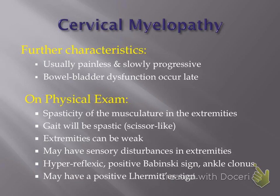Lhermitte's sign is when you have the patient bend their chin down to their chest and they get almost a shock-like sensation. That's kind of an ominous sign as it does suggest pretty severe spinal cord compression, but can also be found in conditions like multiple sclerosis.